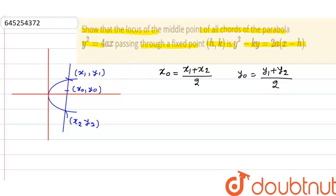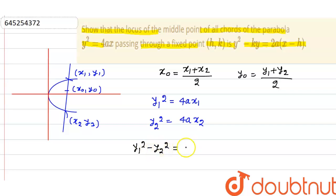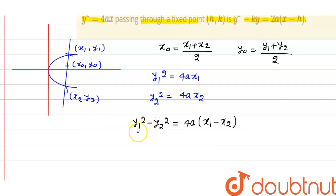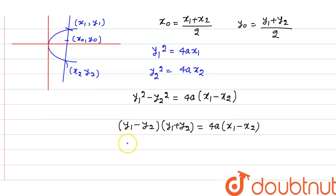Since (x1, y1) and (x2, y2) lie on the parabola, we have y1² = 4ax1 and y2² = 4ax2. Subtracting these equations gives y1² - y2² = 4a(x1 - x2).